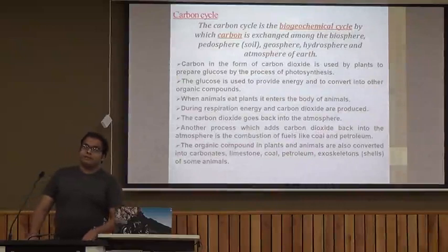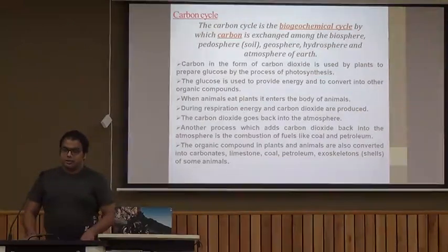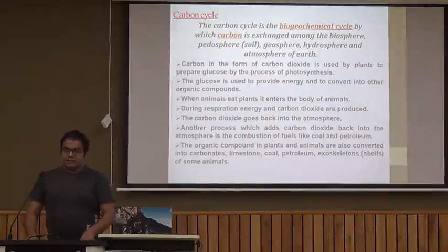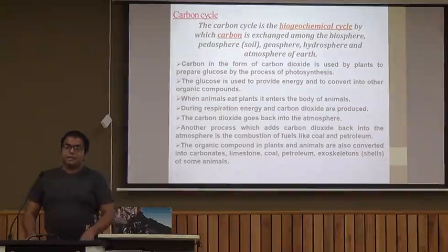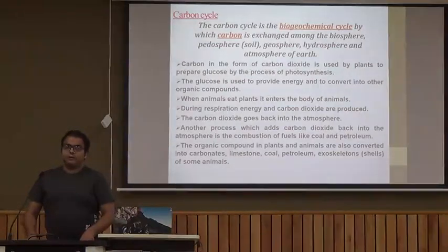The next cycle is the carbon cycle. It involves the exchange of carbon among the biosphere, pedosphere (soil), geosphere, hydrosphere, and atmosphere. Carbon in the form of carbon dioxide in air is used by plants to prepare glucose through photosynthesis. Glucose is used to provide energy and is converted into other organic compounds. When animals eat plants, these compounds enter their bodies. During respiration, energy and carbon dioxide are produced and this carbon dioxide is returned to the atmosphere.